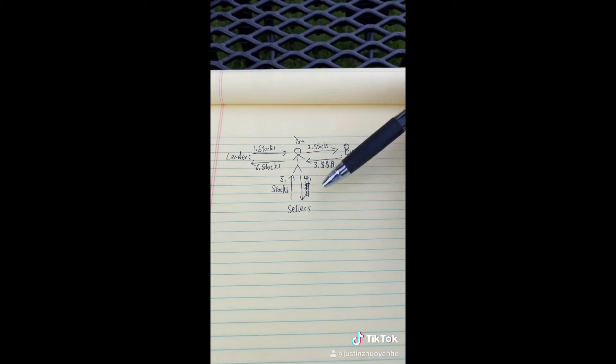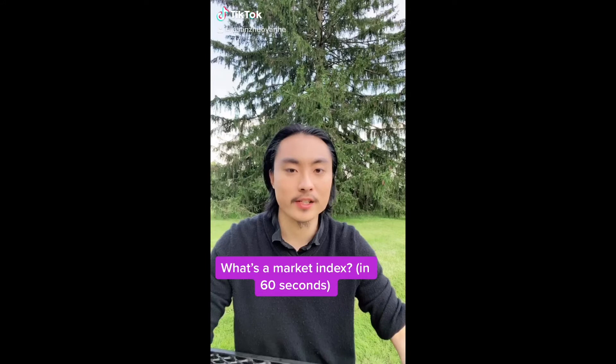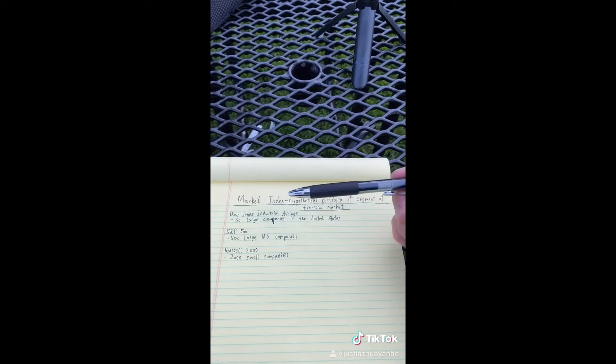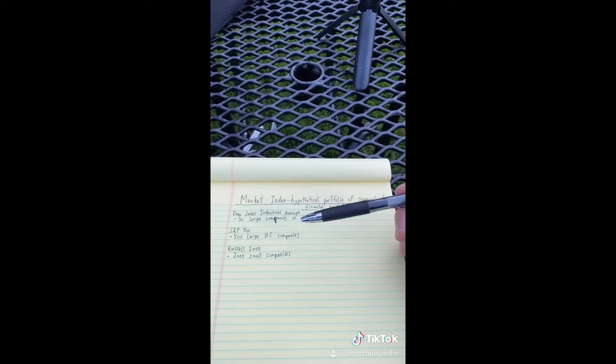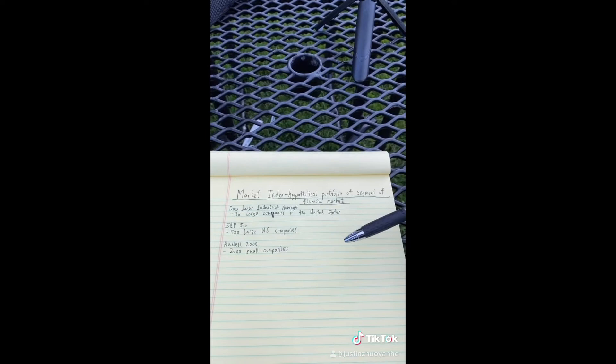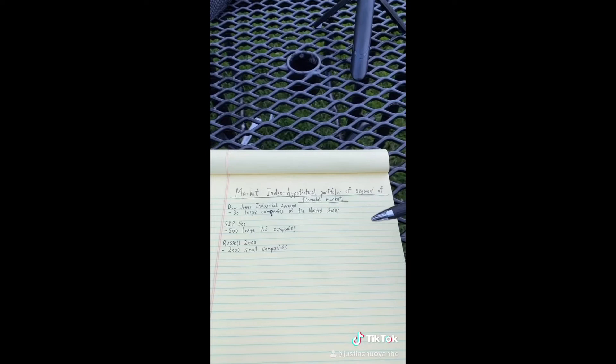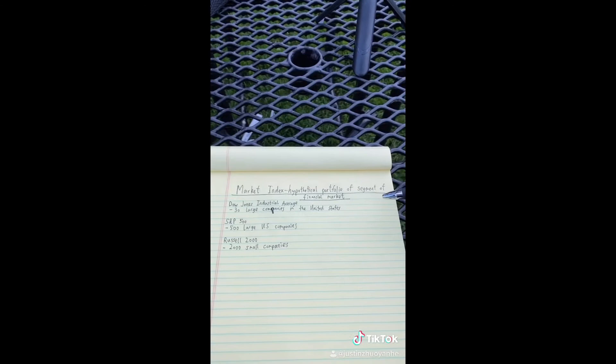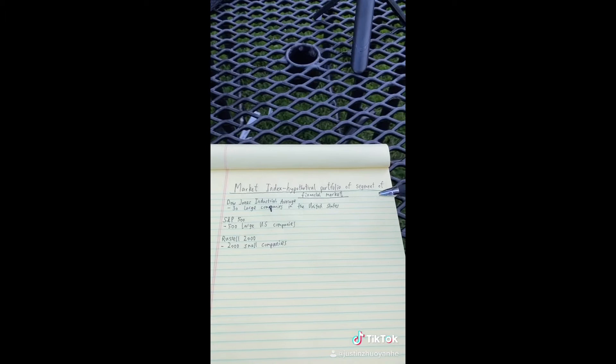What's a market index in 60 seconds? A market index is a hypothetical portfolio of a segment of the financial market. For example, the Dow Jones is a hypothetical portfolio of 30 large companies in the U.S. The S&P 500 is a market index of 500 large U.S. companies. And the Russell 2000 is a hypothetical portfolio of 2,000 small companies. And these market indexes are used to track the market and give people a good idea of how the market is going overall. But since it's only focused on a certain segment of the financial market, it gives investors and other people looking at the stock market an idea of a specific segment of the financial market and how that specific segment is doing overall.